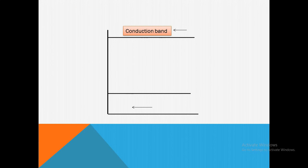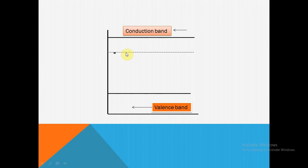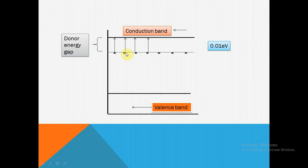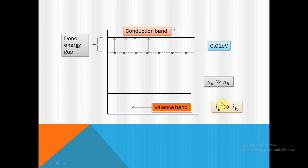Look at the diagram. We know that this is the conduction band and this is the valence band. As we add pentavalent impurity to the pure semiconductor, another energy level is formed just below the conduction band, which is known as the donor energy level. The electrons are situated in the donor energy level, and the energy gap between the donor level and the conduction band is 0.01 electron volt. The density of electrons is greater than the density of holes in an N-type semiconductor. Therefore, current is maximum due to electrons rather than holes.